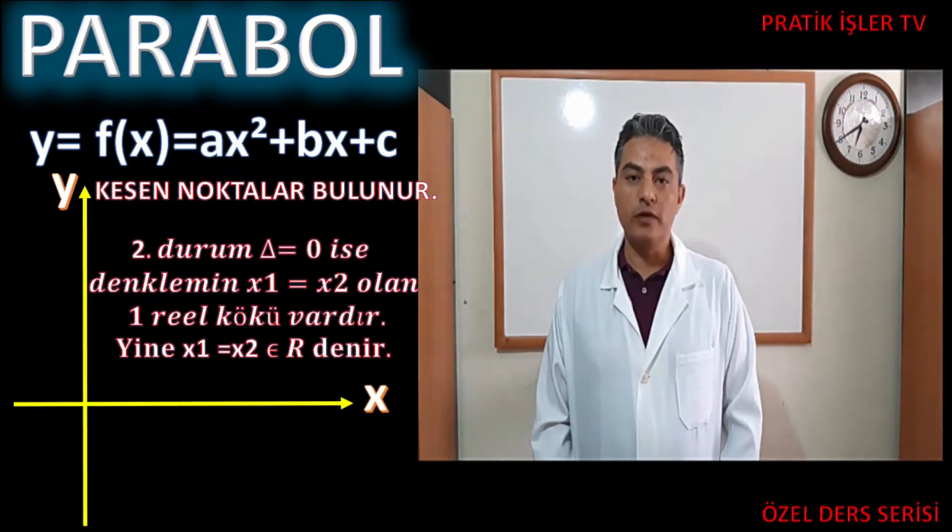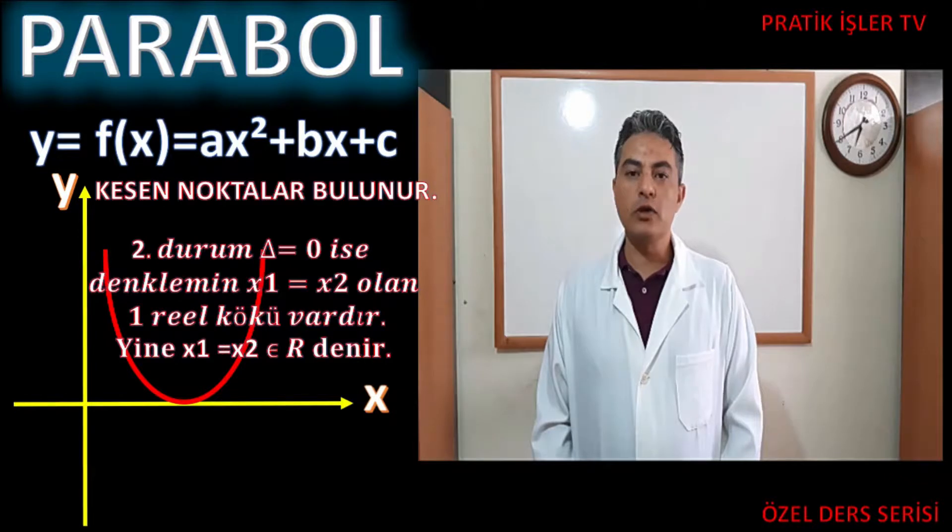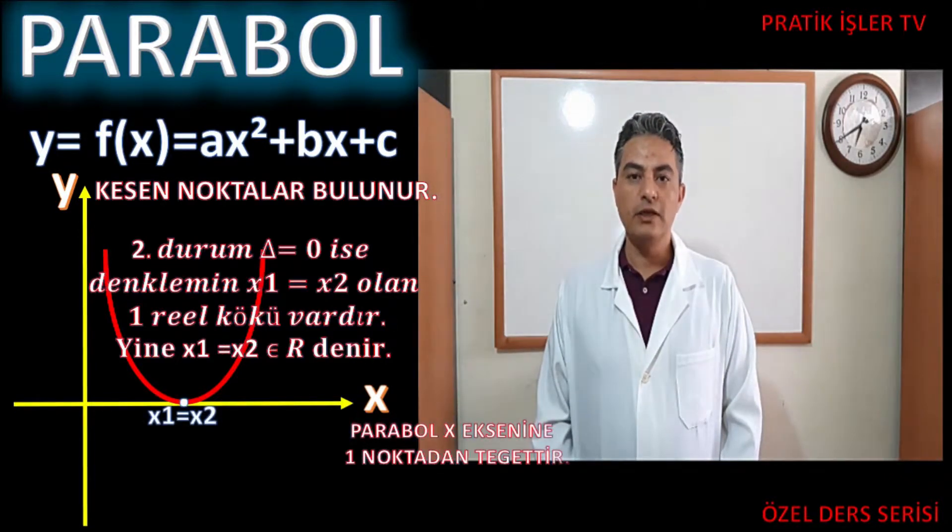İkinci durumda delta eşit sıfır durumu. Burada yine iki kök vardır arkadaşlar. Fakat bu iki kök birbirine eşittir. Bu çizdiğiniz grafikte şu anlama gelir. Parabol x eksenine bir noktada teğettir.